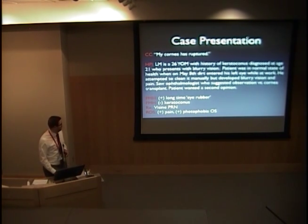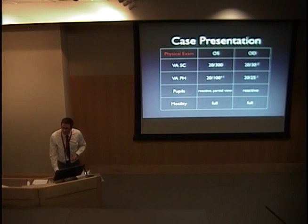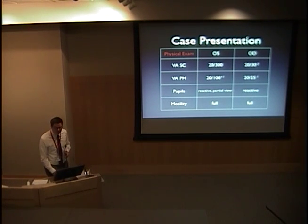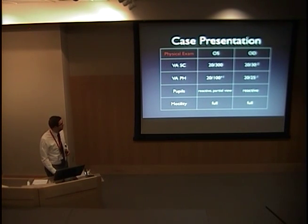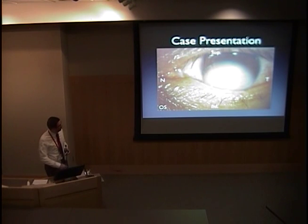As described in the nurse's notes, he's a long-time eye rubber, definitely has pain, a little photophobia, and no family history. On physical examination when we saw him in clinic, his visual acuity on the left eye is quite affected, whereas on his right it is not necessarily. He could see through this. This is the affected cornea — you can see there's sort of an inferior predominance white finding.